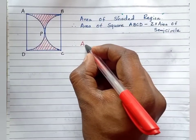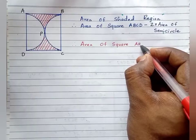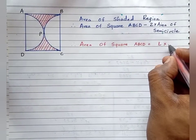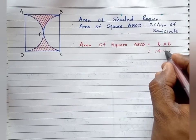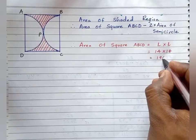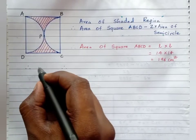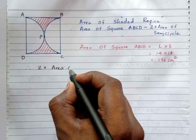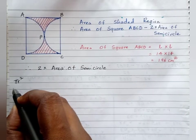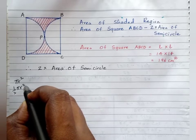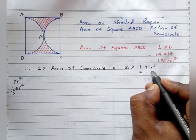Area of square equals length into length. The length is already given as 14 centimeter, so 14 into 14 gives 196 centimeter square. Now, two times the area of semicircle equals 2 into half into pi r square, which simplifies to pi r square — that is one full circle's area.